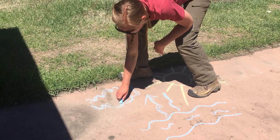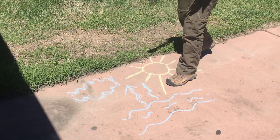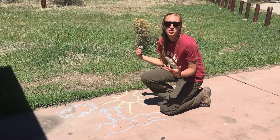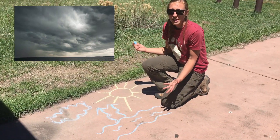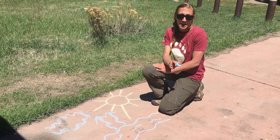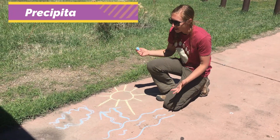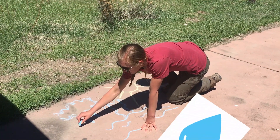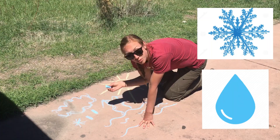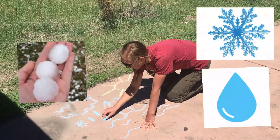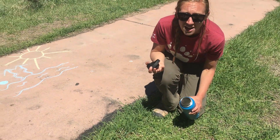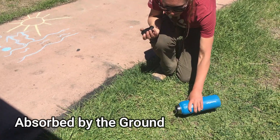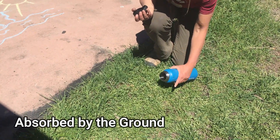When the water droplets in the cloud become too heavy or get too big, we get another step of the water cycle — precipitation! Precipitation is when water falls back down to the Earth as rain, or maybe a snowflake, or maybe even as hail.